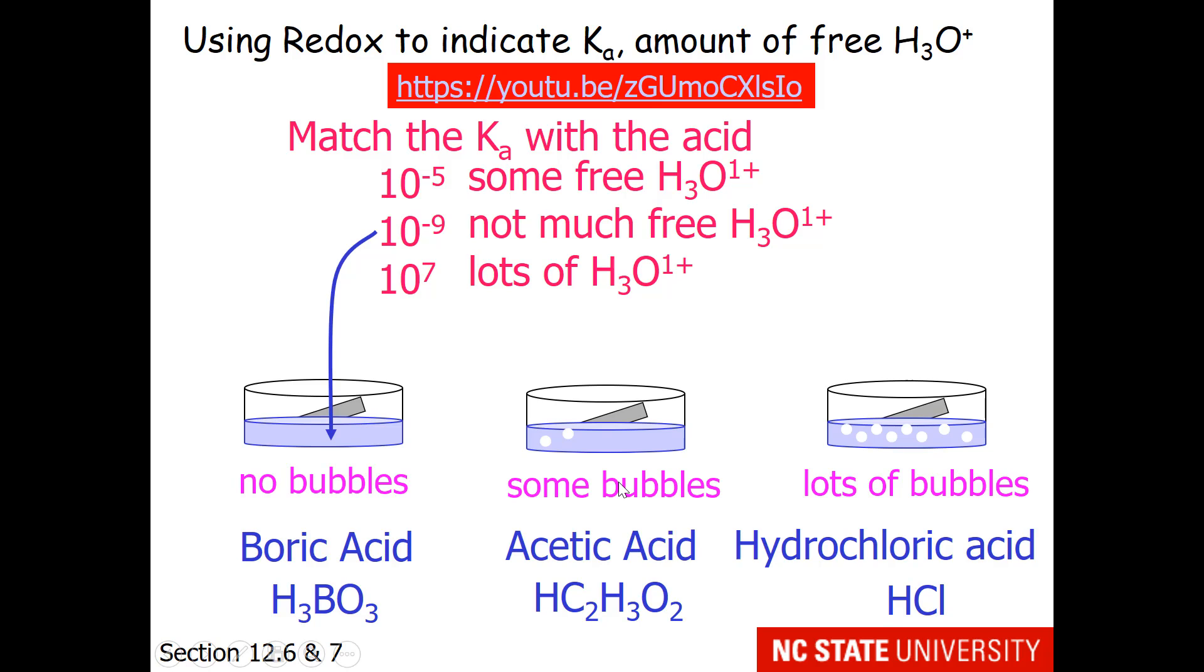What if you saw some bubbles? Well, I'm hoping you'd equate that with a Ka value of 10 to the minus 5. A little bit of free proton or hydronium. And if you see a ton of bubbles, that should be 10 to the 7th, a lot of free hydronium. Let's go check.